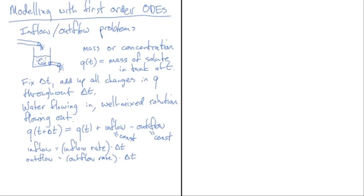So we have q(t + Δt) = q(t) + (flow_in − flow_out) × Δt. We're not yet at a differential equation, but the hints are here. By bringing the q's to the same side, subtracting q(t) from both sides, and factoring out delta t, we can then divide through by delta t to get something that looks like a finite difference ratio.